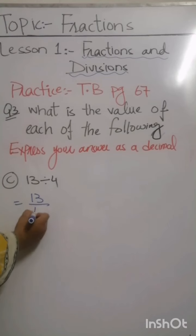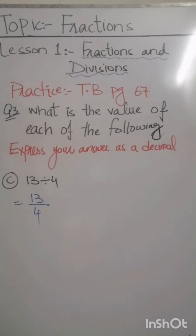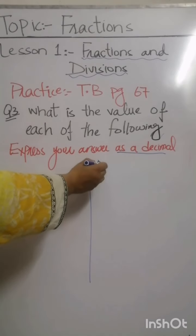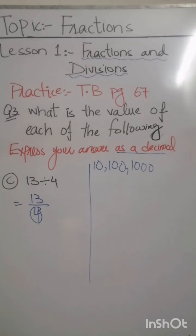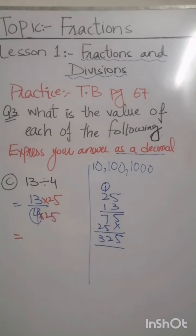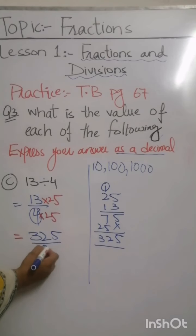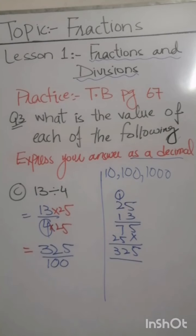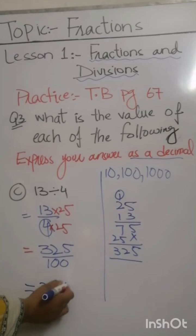For part c, thirteen divided by four: first convert to the fraction 13 by 4. To express as a decimal, we need the denominator to be 10, 100, or 1000. We choose 100, so we multiply 4 by 25 to get 100, and also multiply the numerator 13 by 25 to get 325. So the equivalent fraction is 325 by 100, and its decimal form is 3.25.